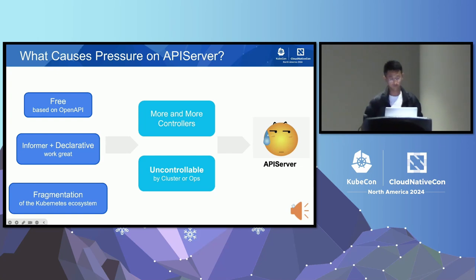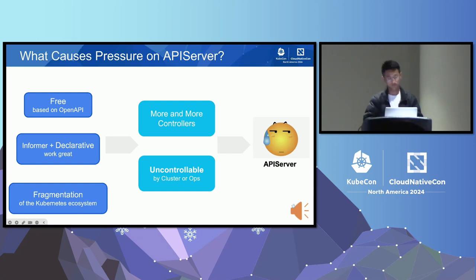Count the number of projects under the CNCF landscape and take a look at your cluster — there are no less than 10 components that use Informer. These components are not controllable by ops people or Kubernetes. Sometimes we have to deploy them on each node to fulfill requirements, and sometimes we can't control which resources these components are listening on unless you simply don't use the component.